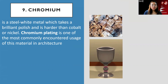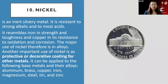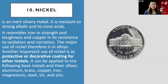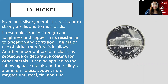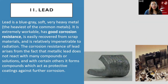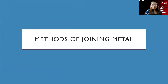Chromium plating is one of the most commonly encountered uses of material in architecture — more of a display finish. Nickel is usually used in nickel coins, and its important architectural use is as a protective or decorative coating applied to other metals. Lead has good corrosion resistance, which is its key advantage in architecture.